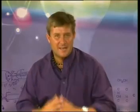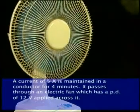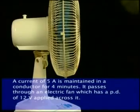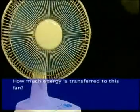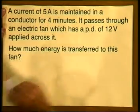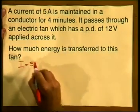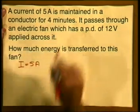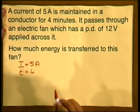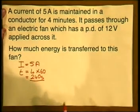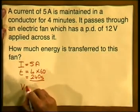Now let's try a more complicated example using the equation Q equals I times T as well as V equals W over Q. A current of 5 amperes is maintained in a conductor for 4 minutes. It passes through an electric fan which has a potential difference of 12 volts applied across it. How much energy is transferred to this fan? Writing down the information: I equals 5 amperes, T equals 4 minutes — we must convert to seconds, so T equals 4 times 60 equals 240 seconds — and V equals 12 volts.